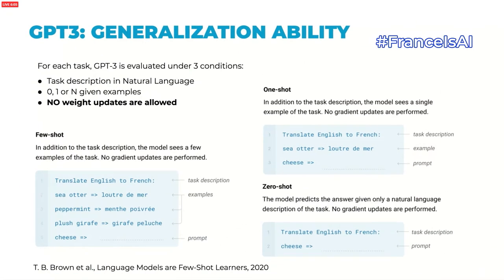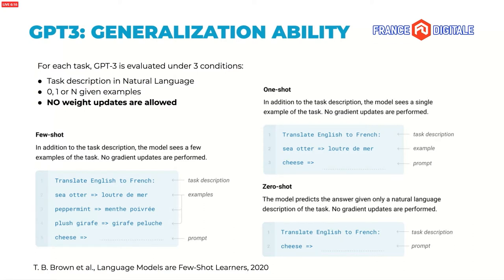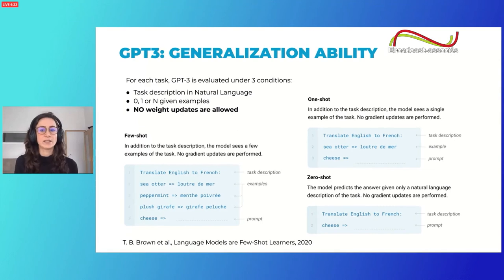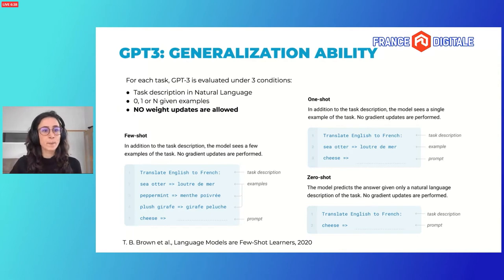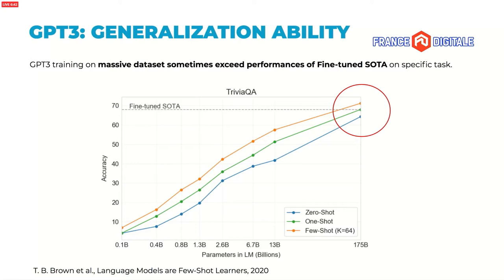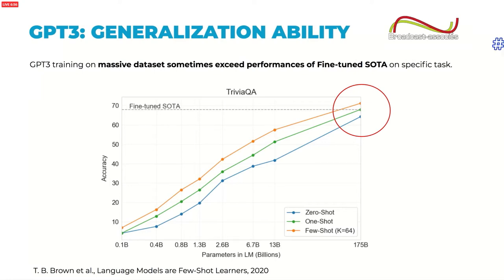For each task, GPT-3 has been evaluated under three conditions. First, few-shot learning, where the model is given a task description and several examples — between 10 and 100 — but no weight updates are allowed. Then one-shot, where the model is given a task description and one example. And zero-shot, where it's only given a task description. Under these conditions, the model has never been trained on any specific task and yet achieves impressive results. On Trivia QA, a reading comprehension task, the one-shot and few-shot performance exceed the SOTA fine-tuned model, making GPT-3 trained on a massive dataset sometimes more efficient than training on a specific task.